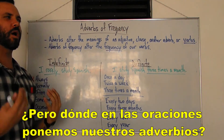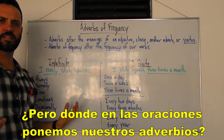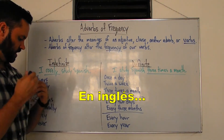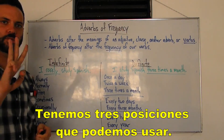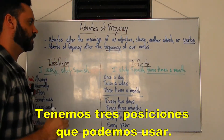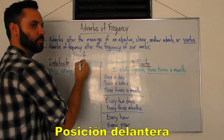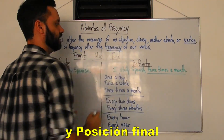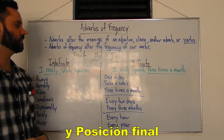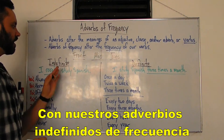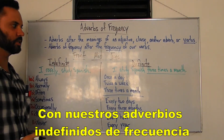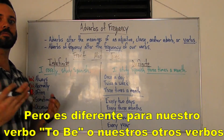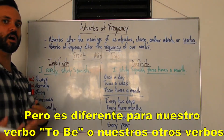But where in the sentences do we put our adverbs? In English, we have three positions we can use: front position, mid position, and end position. With our indefinite adverbs of frequency, we use the mid position. But it is different for our verb to be or our other verbs.